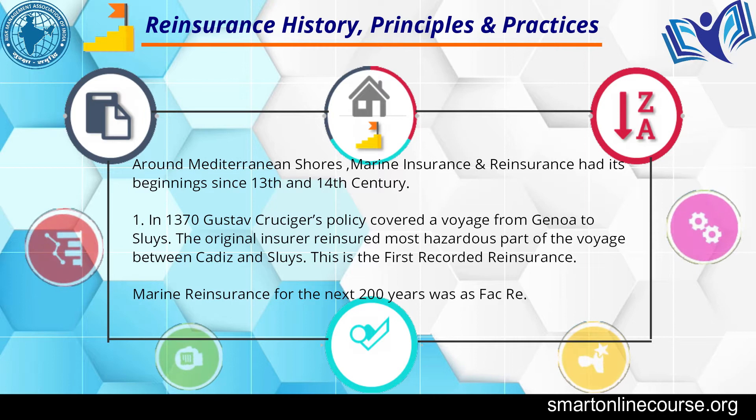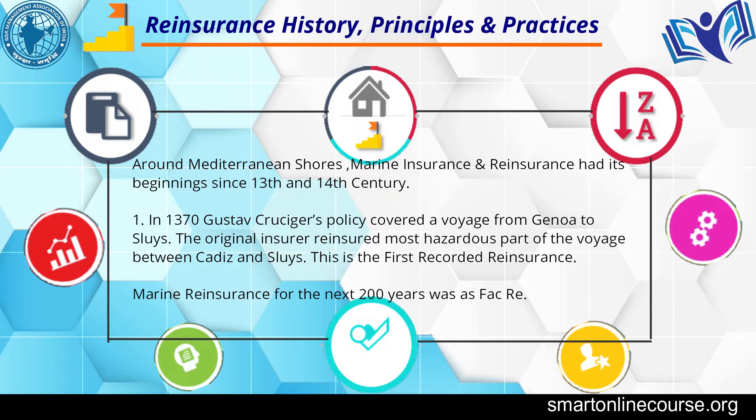Around Mediterranean shores, marine insurance and reinsurance had its origins in the 13th and 14th centuries. In 1370 AD, Gustav Gruciger's policy covered a voyage from Genoa to Slavis. The original insurer reinsured the most hazardous part of the voyage between Cadiz and Sluys. This is the first recorded reinsurance transaction.